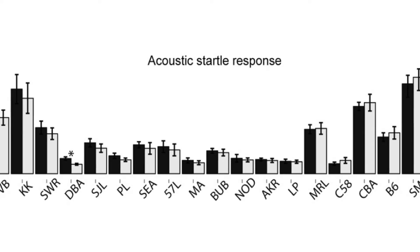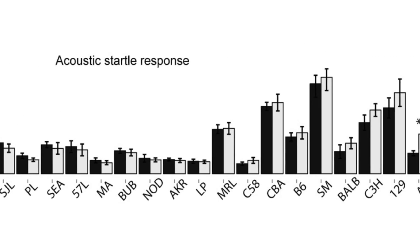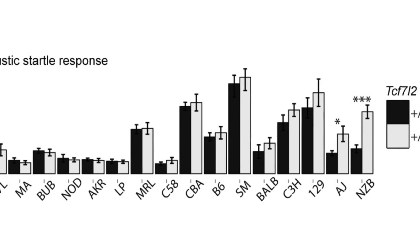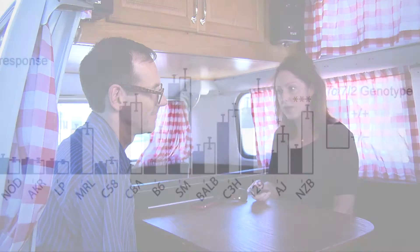For example, TCF7L2 haploinsufficiency increased acoustic startle response in several strains, but decreased it in several others.